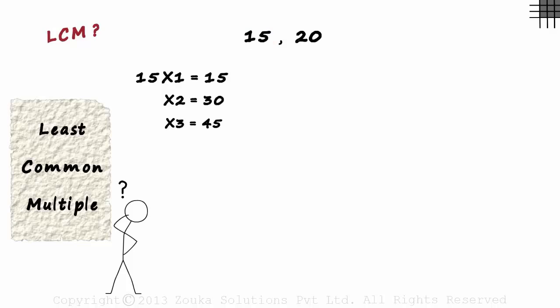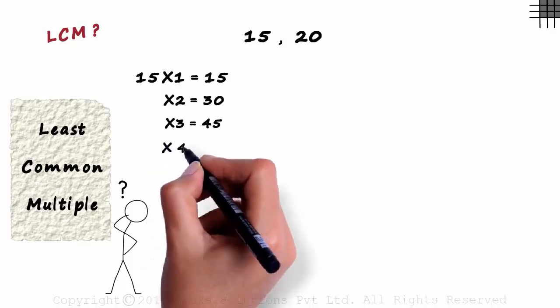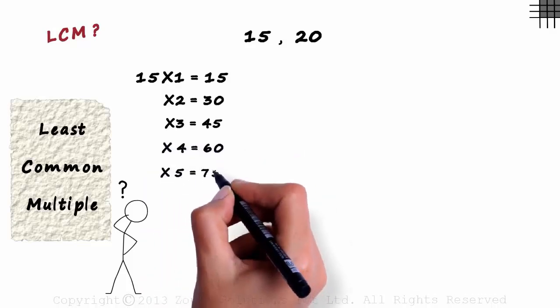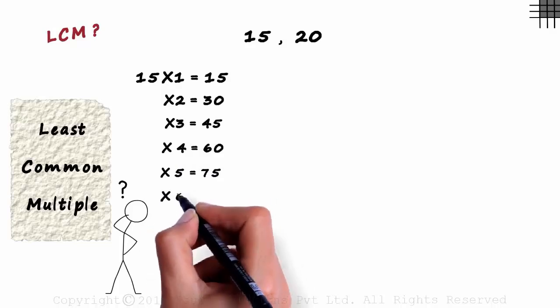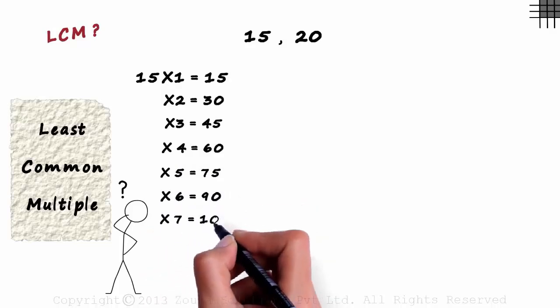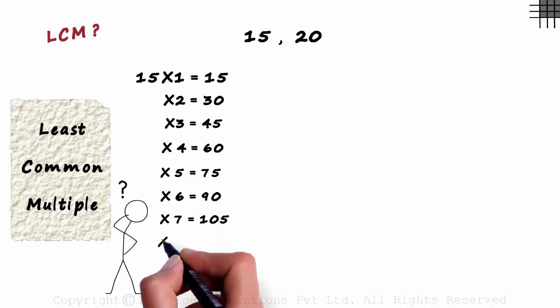Let us write down the first eight multiples of 15. 15 times 4 is 60. 15 times 5 is 75. 15 times 6 is 90. 15 times 7 is 105, and 15 times 8 is 120. These are the first eight multiples of 15.